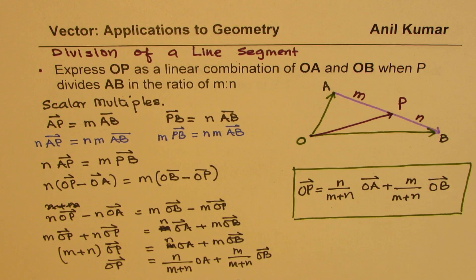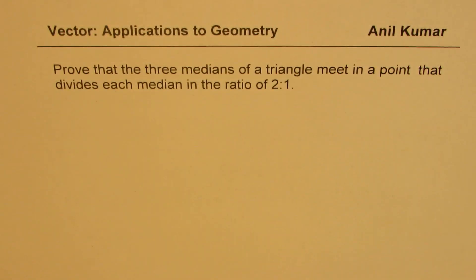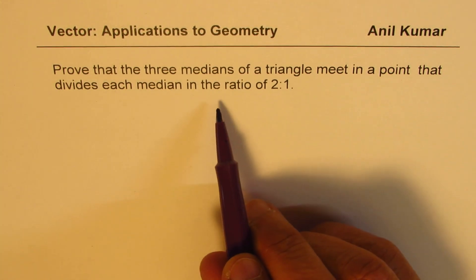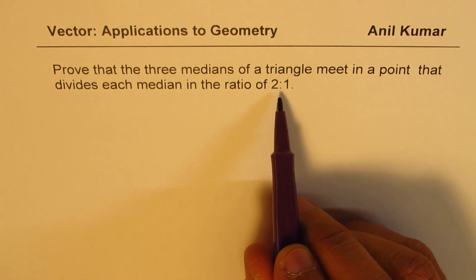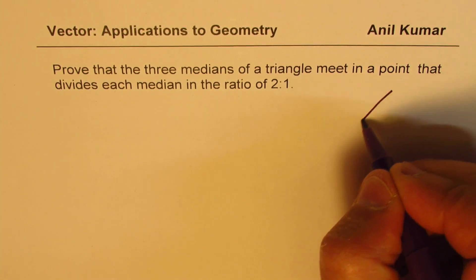I'll also provide you with a link so that you can look into the proof of this particular formula. Now let's try to answer the question. We are given a triangle and we want to prove that the medians of this triangle will be divided in the ratio of 2:1.